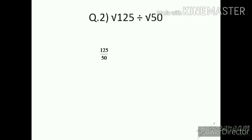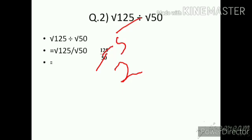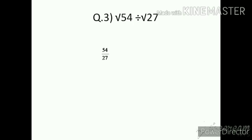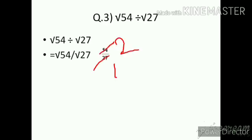Question number 2: √125 ÷ √50. Write as √125 upon √50 and simplify by dividing: 25 × 2 = 50 and 25 × 5 = 125. Equal to √5 upon √2, which is √(5/2). Question number 3: √54 ÷ √27. Simple division: 54 upon 27. 27 × 2 = 54, so the answer is √2.